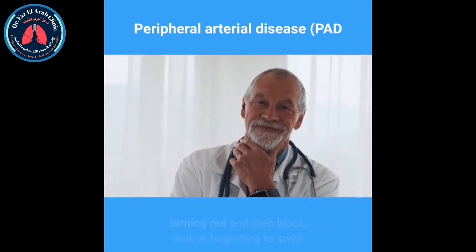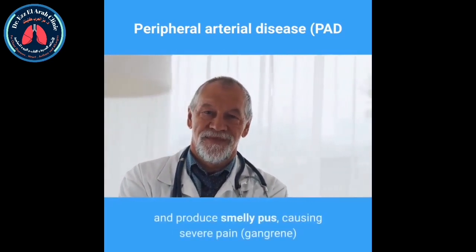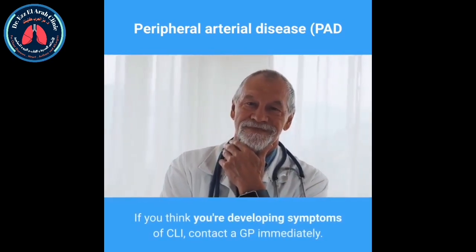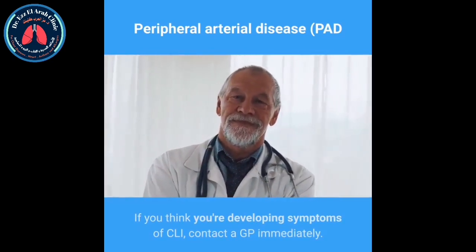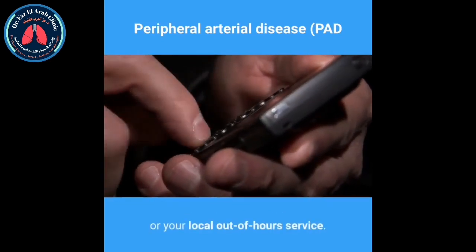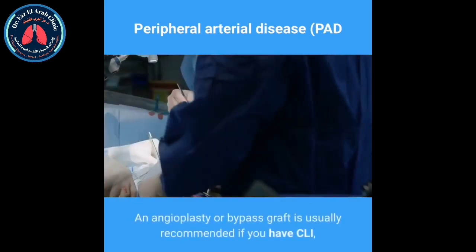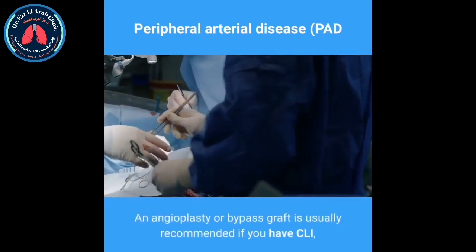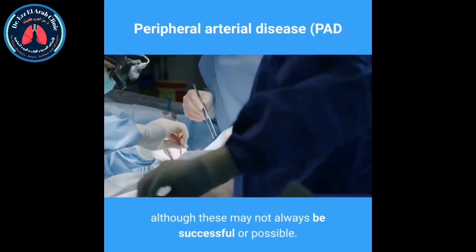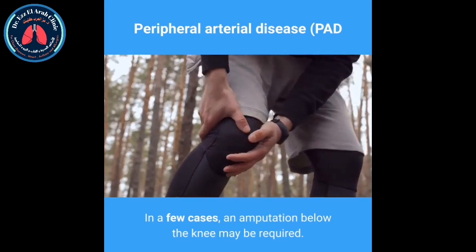Further symptoms include loss of muscle mass in your legs, and the skin on your toes or lower limbs becoming cold and numb, turning red and then black, and beginning to swell and produce smelly pus, causing severe pain — this is called gangrene. If you think you are developing symptoms of CLI, contact a GP immediately, or telephone NHS 111. An angioplasty or bypass graft is usually recommended, though in a few cases an amputation below the knee may be required.